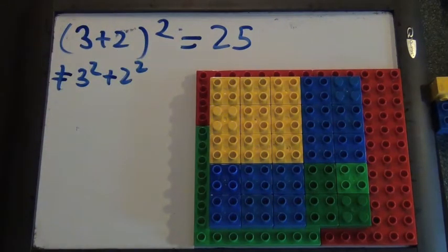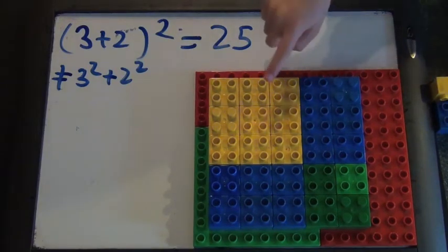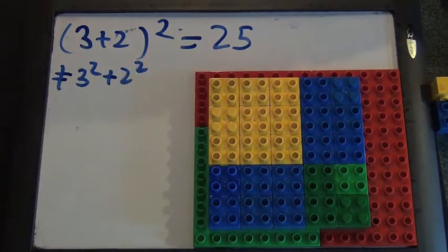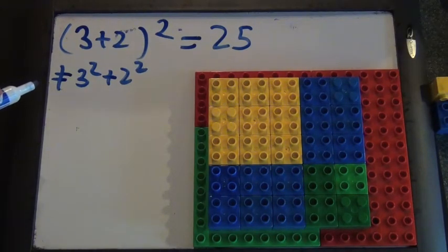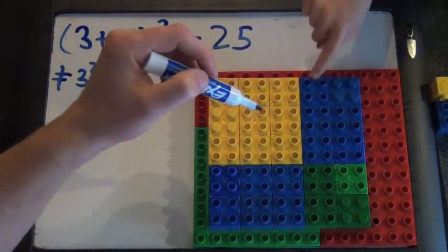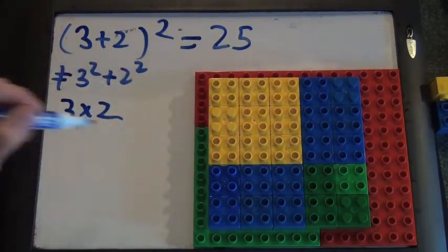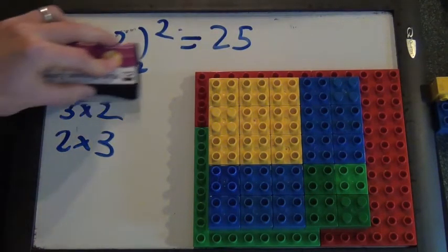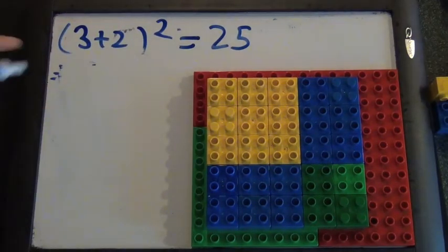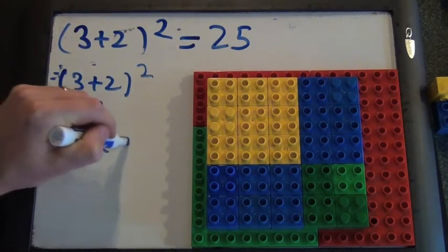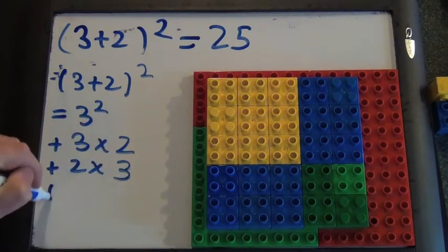Can you find the three squared square in here? There's that. And where's the two squared square? What did we forget to count when we did three squared and two squared? We forgot to count these blue blocks. And what are the blue blocks? Six blocks. They're three tall — there's one that's three times two, and one that's two times three. So the interesting thing we just found is that three plus two squared equals three squared plus three times two plus two times three plus two squared.